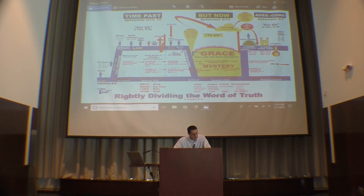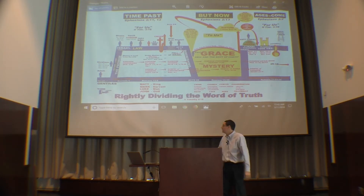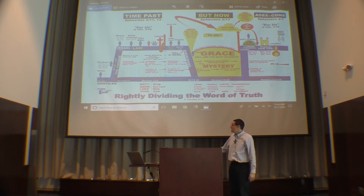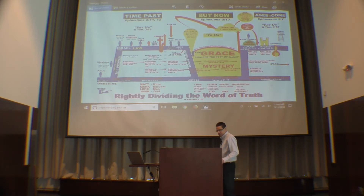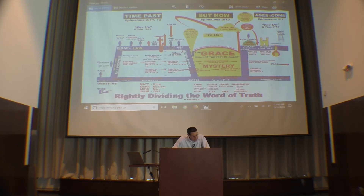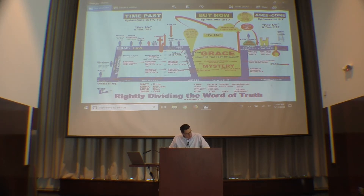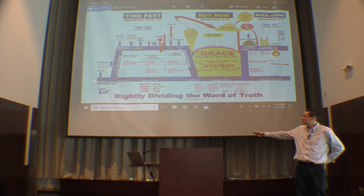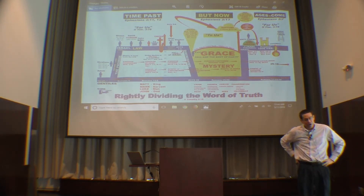Look at verse 6: 'That the Gentiles should be fellow heirs and of the same body.' Do you remember when we were in Matthew 10 — 'Go not into the way of the Gentiles'? Remember Matthew 15, where the Lord says to the woman of Canaan that she was a dog? They weren't fellow heirs. Verse 8: unto Paul 'is this grace given that I should preach among the Gentiles the unsearchable riches of Christ.' Those riches of Christ are unsearchable because you can't search them out in Genesis 1 to Malachi 3, to Matthew, Mark, Luke, and John. They're not there because they hadn't been revealed.